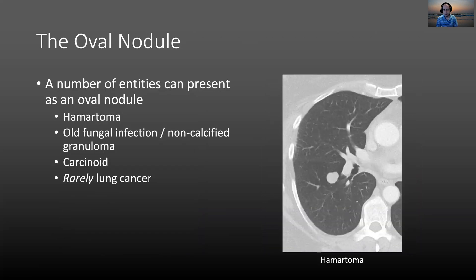Moving on to another important category: the oval nodule. The oval, well-circumscribed, smooth nodule is a pretty common entity. Some represent intrapulmonary lymph nodes, but setting that category aside, there are several other entities that can produce oval nodules. The first is the hematoma. Here is an example of a hematoma proven by surgical resection. Most hematomas will be indeterminate based on CT and would require biopsy or surgical resection to confirm they're benign.